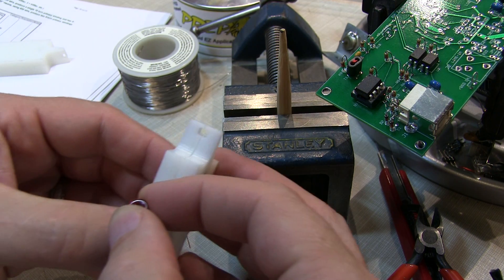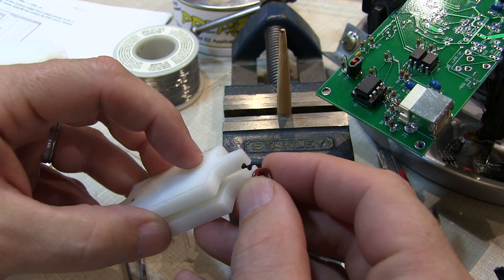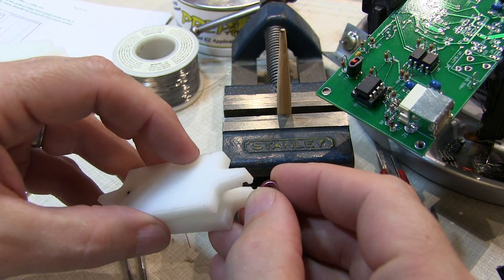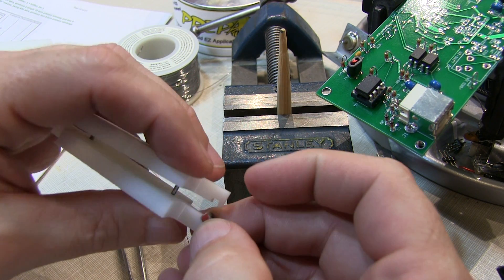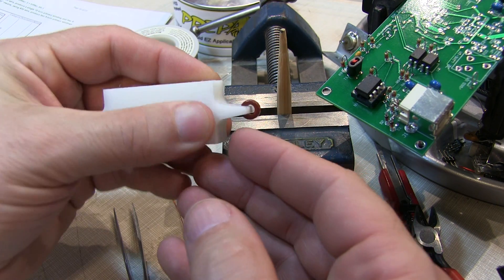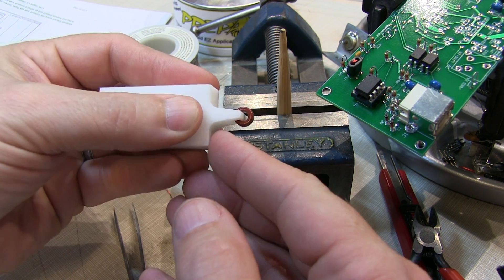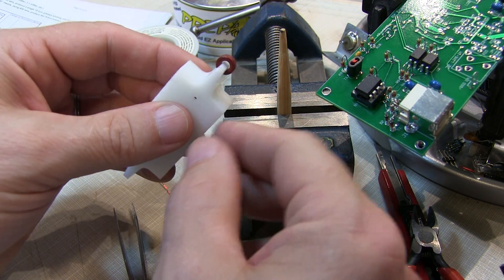The QRP Me website sells these nifty little tools, I think they were designed by another amateur, that allows you to clamp the toroids in a little slot.